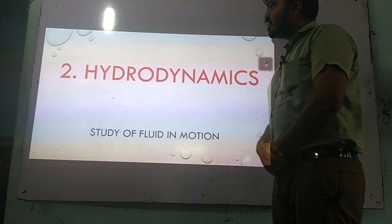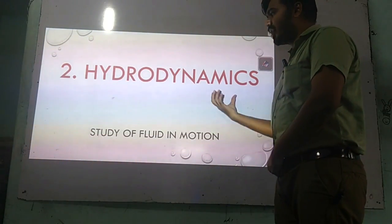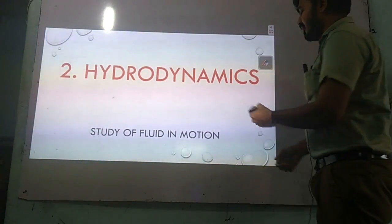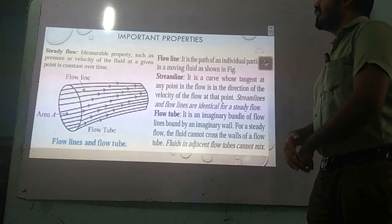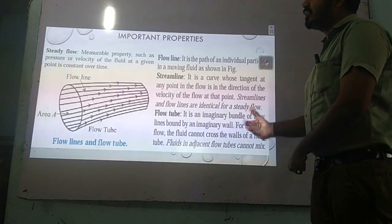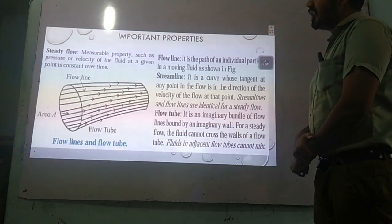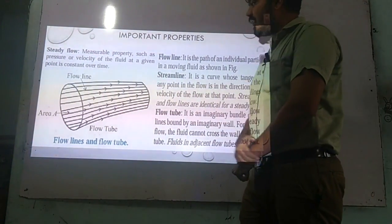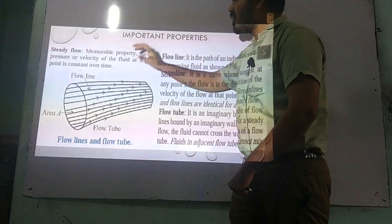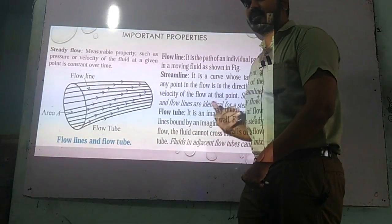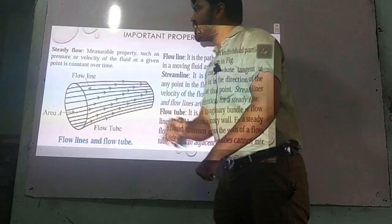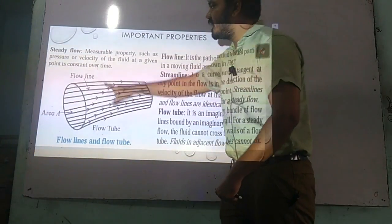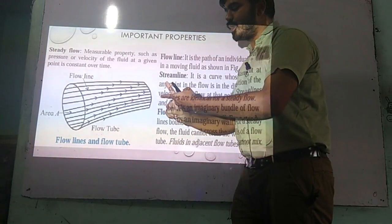Hello friends, today we are going to start with hydrodynamics, that is fluid in motion. Here we start with steady flow — when a liquid flows with constant pressure or velocity, such flow is called steady flow. Always keep in mind, whatever flow lines we observe will be parallel in steady flow; they are not going to cross each other.